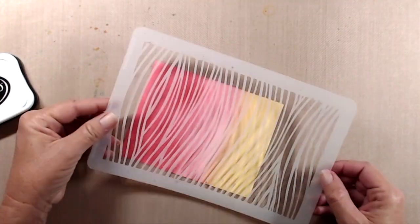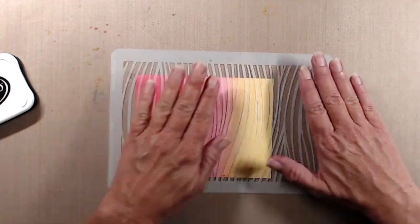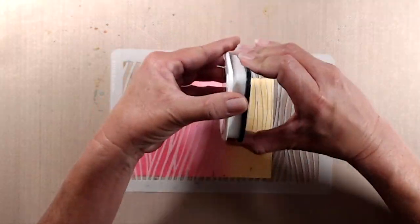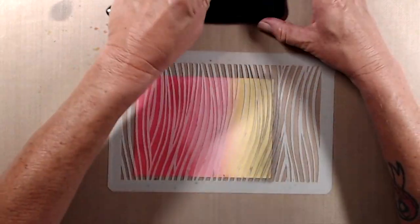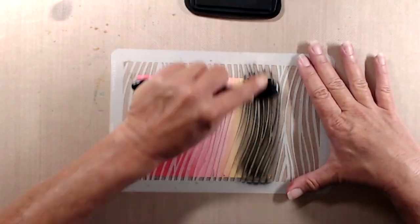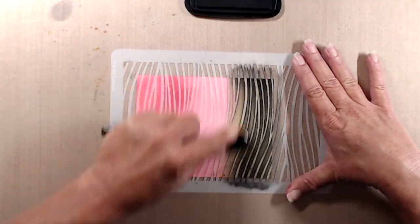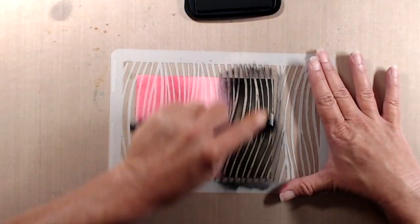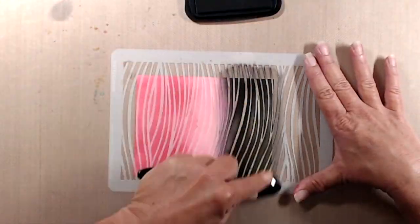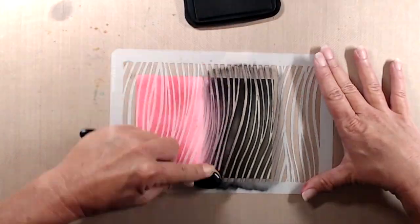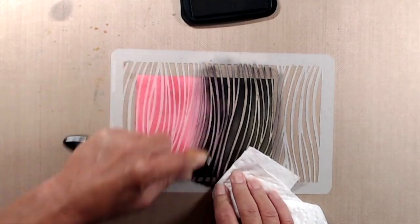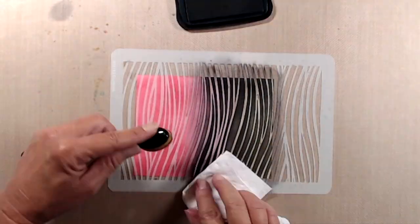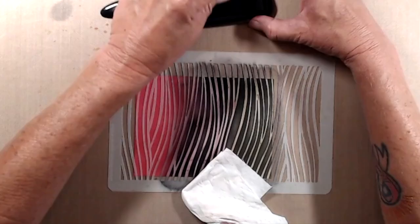After the ink blending was done, I placed my Currents slash zebra stripe stencil on top of the ink blended panel, and I did use some pixie spray on the back of the stencil because it is a pretty delicate stencil. Then I used a smaller ink blending brush with Memento Tuxedo Black ink to do my stenciling, and I did go in with a very heavy hand on the stencil because I wanted to have the black stripes be very deep black.